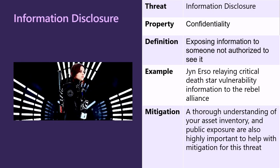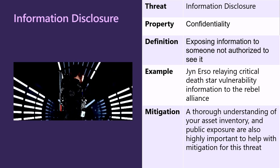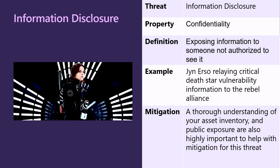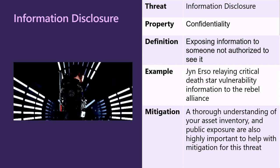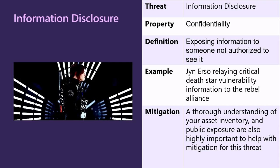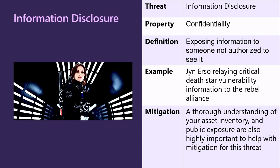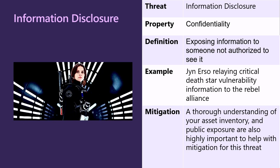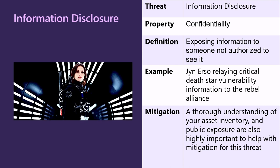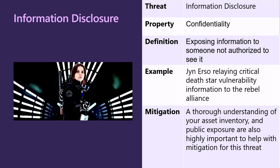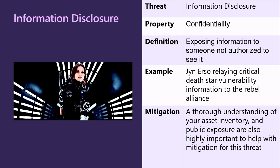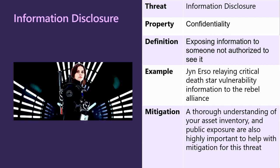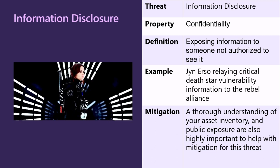I is for Information Disclosure — the property of confidentiality — exposing information to someone not authorized to see it. In our example, Jyn Erso from Rogue One relaying critical Death Star vulnerability information to the Rebel Alliance, giving them the vulnerabilities that lie within the Death Star. A potential mitigation could be a thorough understanding of your asset inventory, and managing public exposure, which is also highly important to help mitigate against this threat.